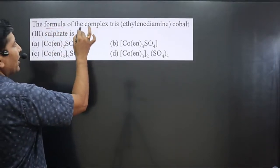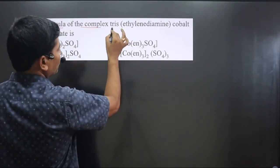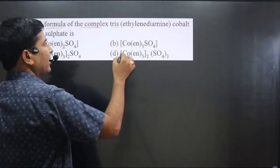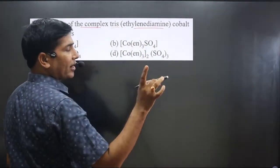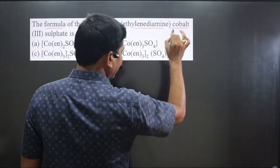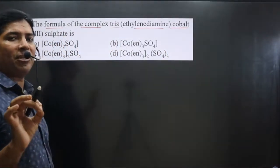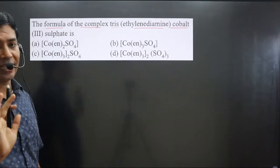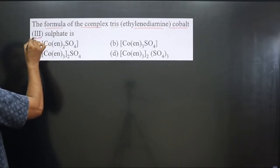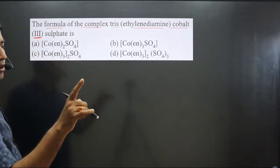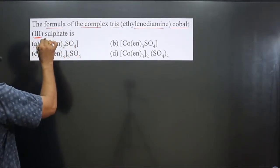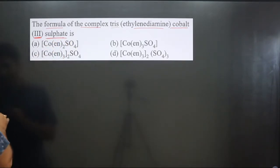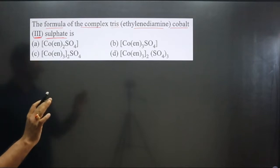The question gives the formula of the complex tris(ethylenediamine)cobalt. 'Tris' means polydentate ligands are given — specifically ethylenediamine, which is a bidentate ligand. Cobalt is the central metal atom present in the cationic complex. The oxidation number of cobalt is +3, and sulfate is the counter ion.